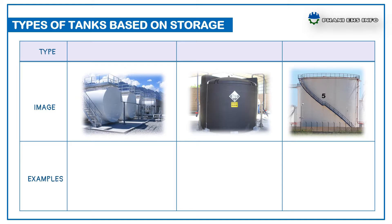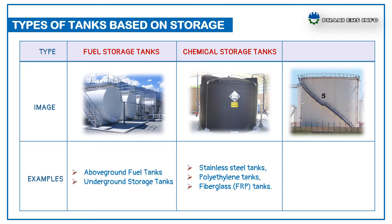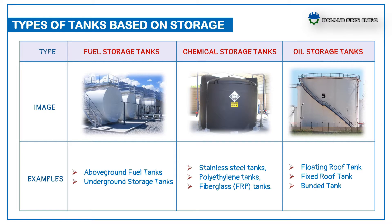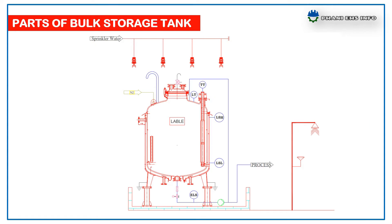They are also known as Bulk Storage Containers based on the MOC and type of storage. There are different types of storage tanks like Fuel Storage Tanks, categorized as above ground fuel tanks and underground storage tanks. Chemical Storage Tanks like SS Tanks, FLP Tanks. Oil Storage Tanks like Floating Roof Tank, Fixed Roof Tank, Bunded Tank, and some other tanks like ISO Containers, HDPE, MS Tanks.